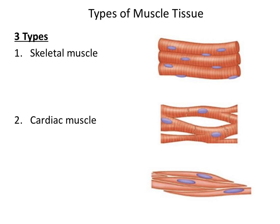The last type of muscle tissue is smooth muscle. Smooth muscle can be found as an inner layer of vessels and passageways, such as the blood vessels of the cardiovascular system and the passageways of the digestive system. When smooth muscle contracts, it causes constriction of vessels and passageways. The shape of a smooth muscle cell resembles that of a squished or flattened football, and it is uninucleated, meaning that it only has one nucleus per cell.